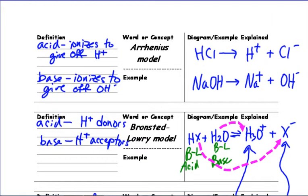The Arrhenius model: an acid is something that ionizes or dissociates to give off H pluses, whereas a base is something that ionizes to give off OH minus ions. So hydrochloric acid versus sodium hydroxide.